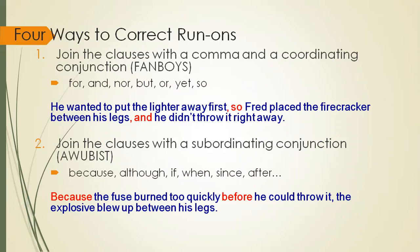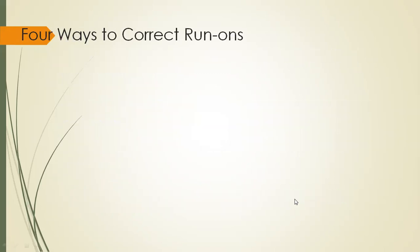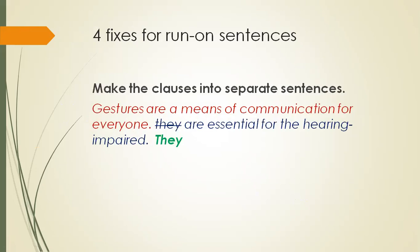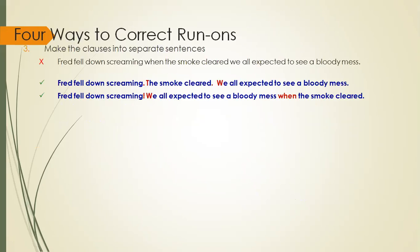So, to correct run-ons, we have several ways. One is joining the clauses with a comma and a coordinating conjunction. Another is joining the clauses with a subordinating conjunction: 'Because if you learn too quickly, he could throw it.' We can also make the clauses into separate sentences. For example: 'Fred placed the firecracker between his legs and he didn't throw it right away.' And: 'Fred fell down screaming. When the smoke cleared, we all expected to see a bloody mess.'